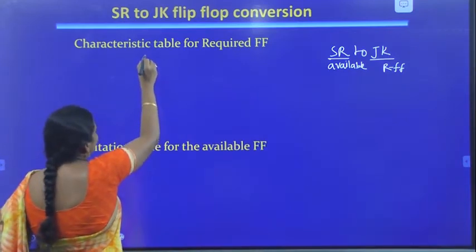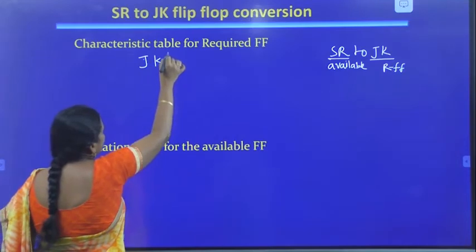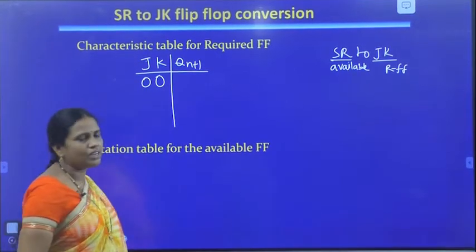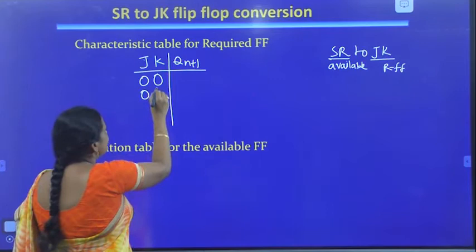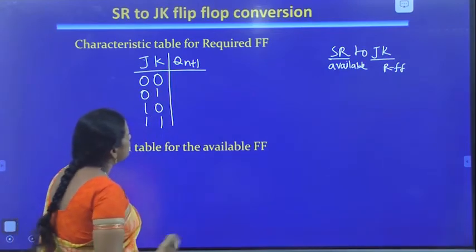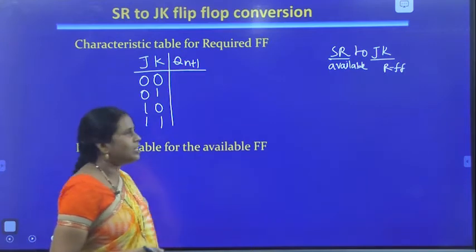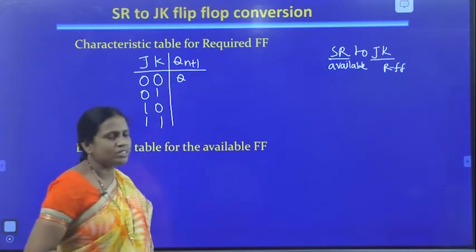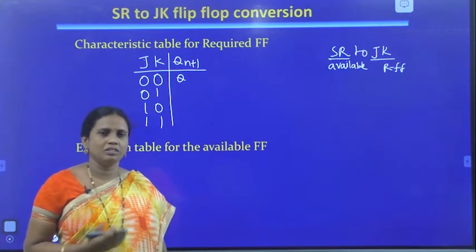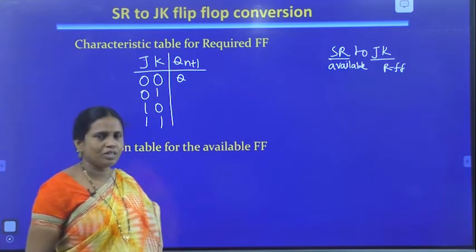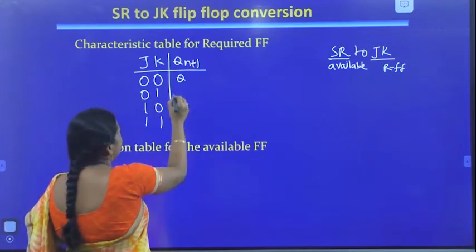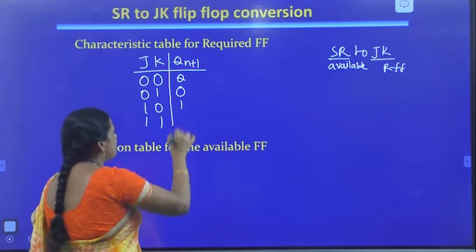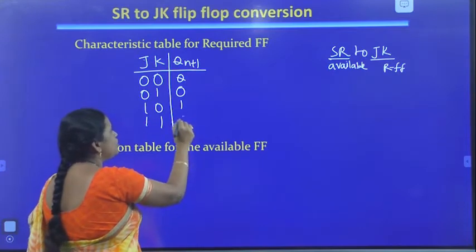The characteristic table for JK flip-flop has inputs J, K and next state Q(N+1). For JK input 00, Q(N+1) = Q (memory). For input 01, Q(N+1) = 0 (reset condition). For input 10, Q(N+1) = 1 (set condition). For input 11, Q(N+1) = Q-bar (complement). This completes the characteristic table for the required JK flip-flop.